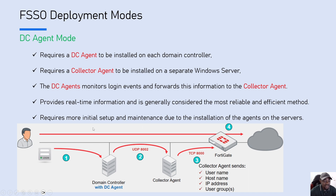In the DC agent mode, assume you have three domain controllers on your infrastructure. You need to install the DC agent — a setup file you download from the FortiCloud website — on each of your domain controllers. You also install another agent called the collector agent on a separate Windows server that is not a domain controller. Users connect to the domain controllers, which forward information to the collector, which then forwards it to the FortiGate device.